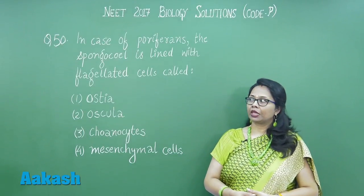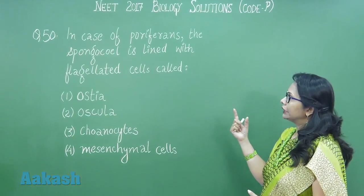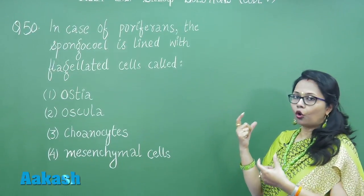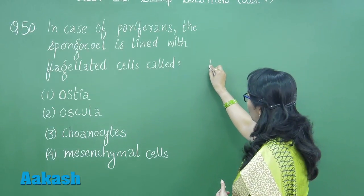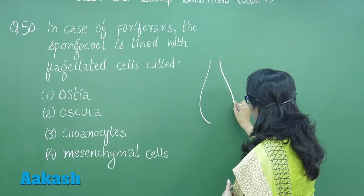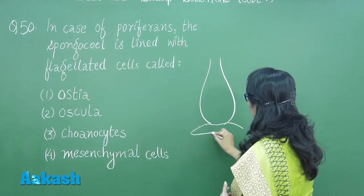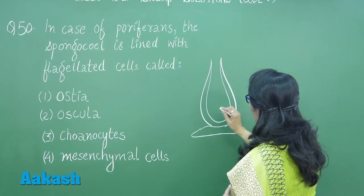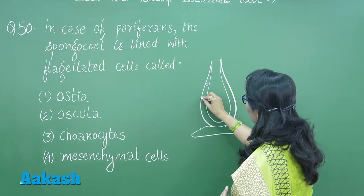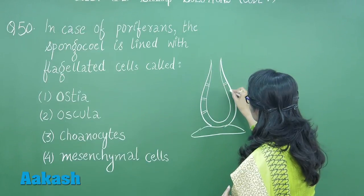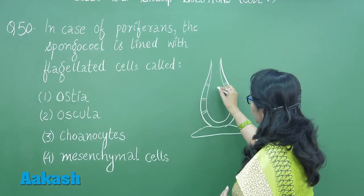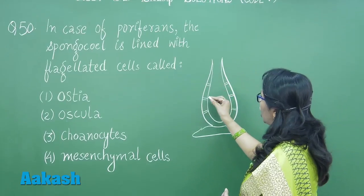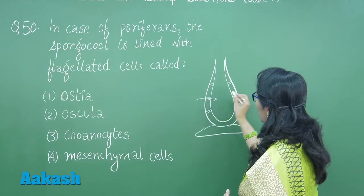Question number 50: In the case of sponges, the spongocoel is lined with flagellated cells called what? The spongocoel is the body cavity of sponges. The body of a sponge is flower-vase shaped and attached to the substratum. This cavity is the spongocoel, and there are a number of pores all over the body. These pores are called ostia, through which water enters, and the pore here is the osculum — plural oscula — through which water exits.